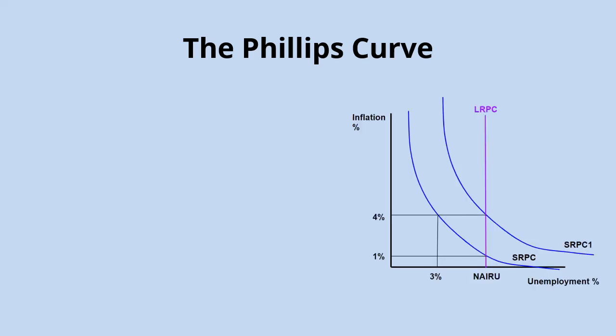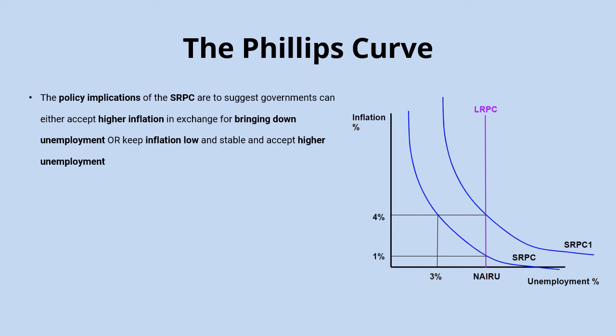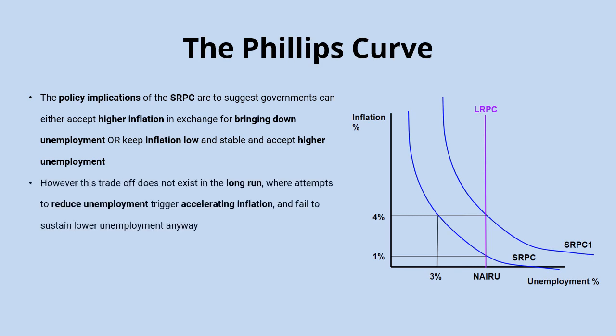The policy implications of the short-run Phillips curve are that governments face that classic trade-off between inflation and unemployment. They can either accept higher inflation in exchange for bringing down unemployment with expansionary policies, or they can keep inflation low using contractionary policies and accept that unemployment will be higher as a result. This trade-off doesn't exist in the long run, as attempts to lower unemployment below its natural level trigger accelerating inflation before the economy returns to the natural level anyway.